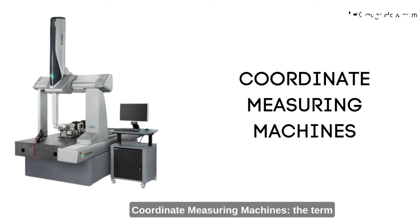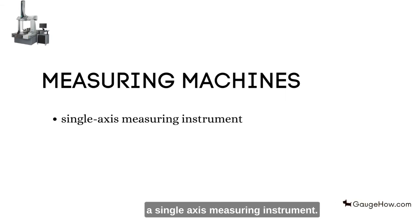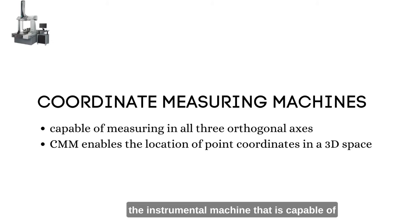Coordinate Measuring Machines. The term measuring machine generally refers to a single axis measuring instrument. Such an instrument is capable of measuring one linear dimension at a time. The term coordinate measuring machine refers to the instrument or machine that is capable of measuring in all three orthogonal axes.